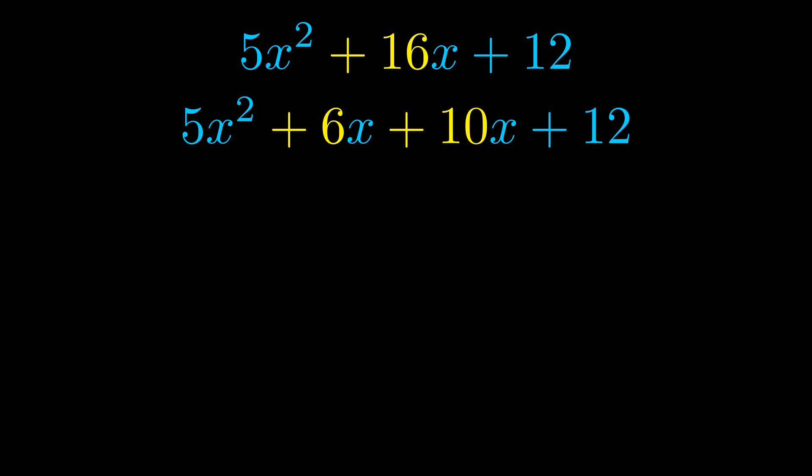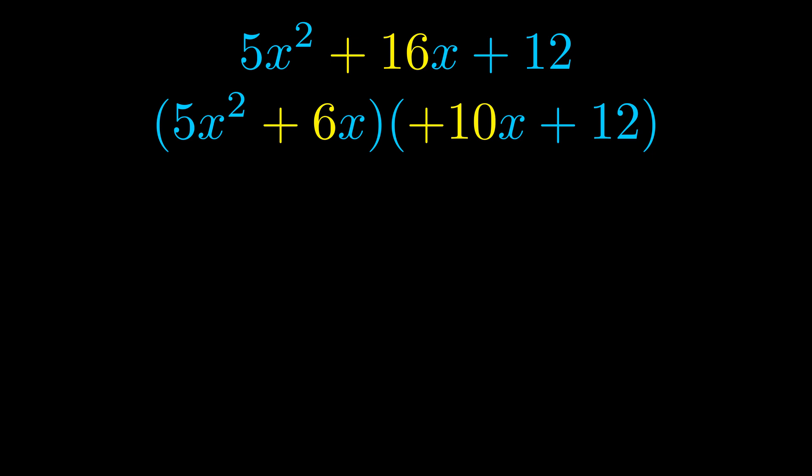Once we've done this, we go ahead and we put parentheses around the first term and the last term. And we do that so that we can take the greatest common factor out of both terms. We can see the greatest common factor is now outside in green.